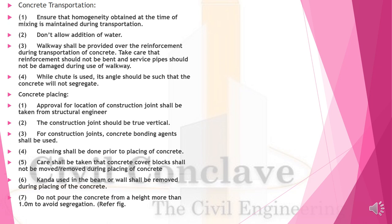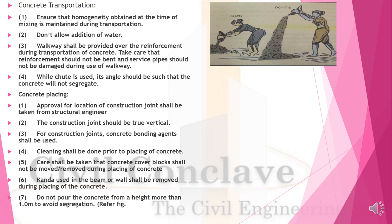Concreting placing: Approval for the location of construction joints shall be taken from the structural designer. Construction joints shall be true and vertical. A concreting bonding agent shall be used at construction joints; cleaning shall be done prior to placing concrete. Ensure concrete cover blocks are not moved or removed while working. Condas used in beams or walls shall be removed during placing. Do not pour concrete from a height more than one meter to avoid segregation.